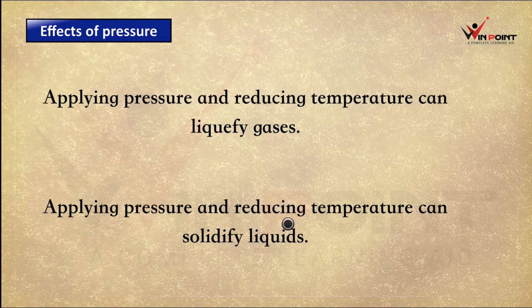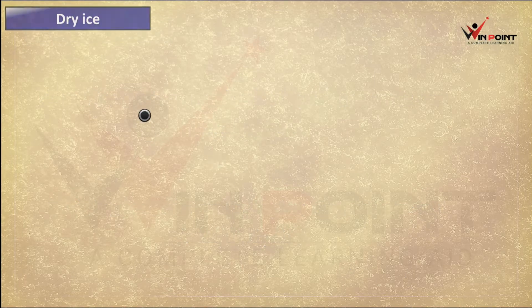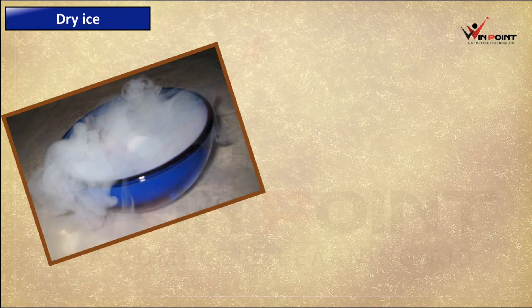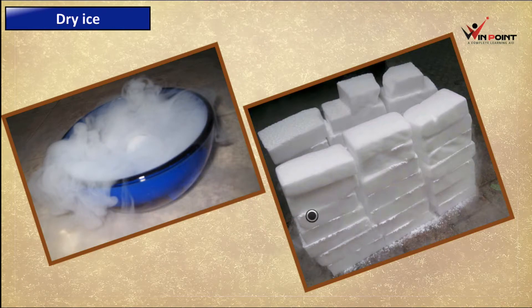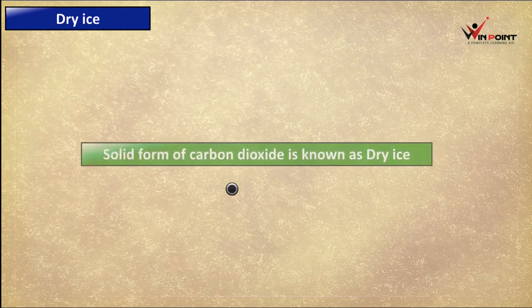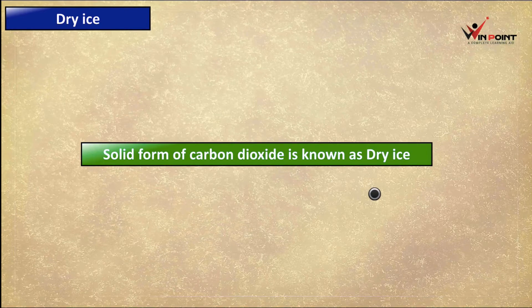Applying pressure and reducing temperature can also solidify liquids. Dry ice is the solid form of carbon dioxide. We can see dry ice in stage programs where it is used to create a smoke effect.